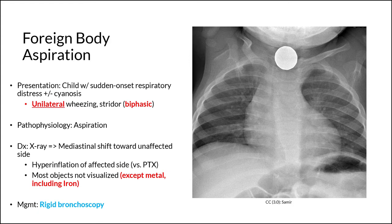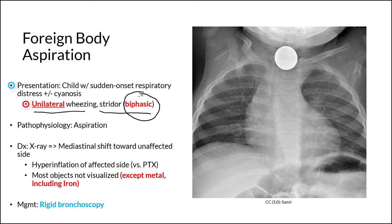One absolutely essential condition to cover in the context of stridor is foreign body aspiration, which shows up all the time not only on the USMLE but also on your pediatric shelf examination. This presents as a child with sudden onset respiratory distress and cyanosis, and classically they will have unilateral findings, especially unilateral wheezing, and in some cases stridor. The stridor is going to be biphasic because it is due to a fixed obstruction.